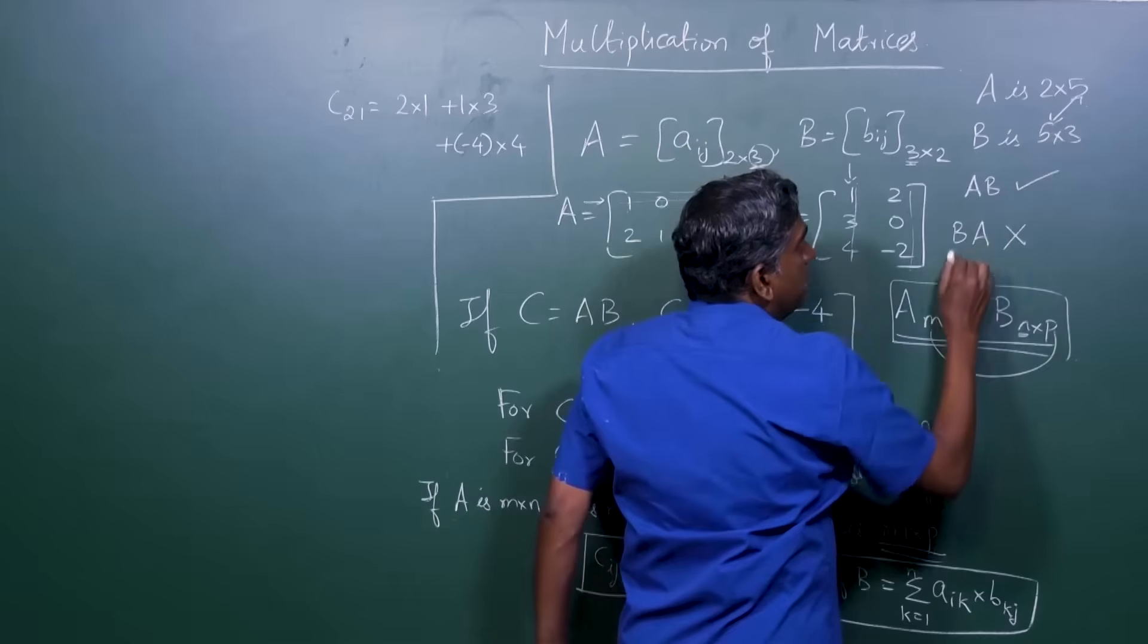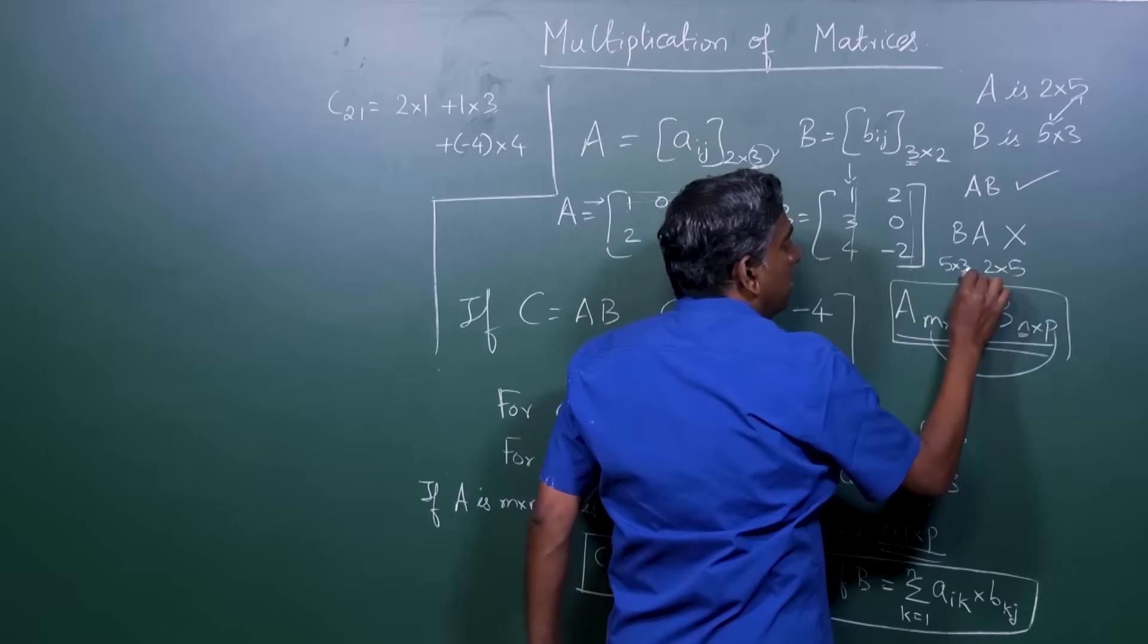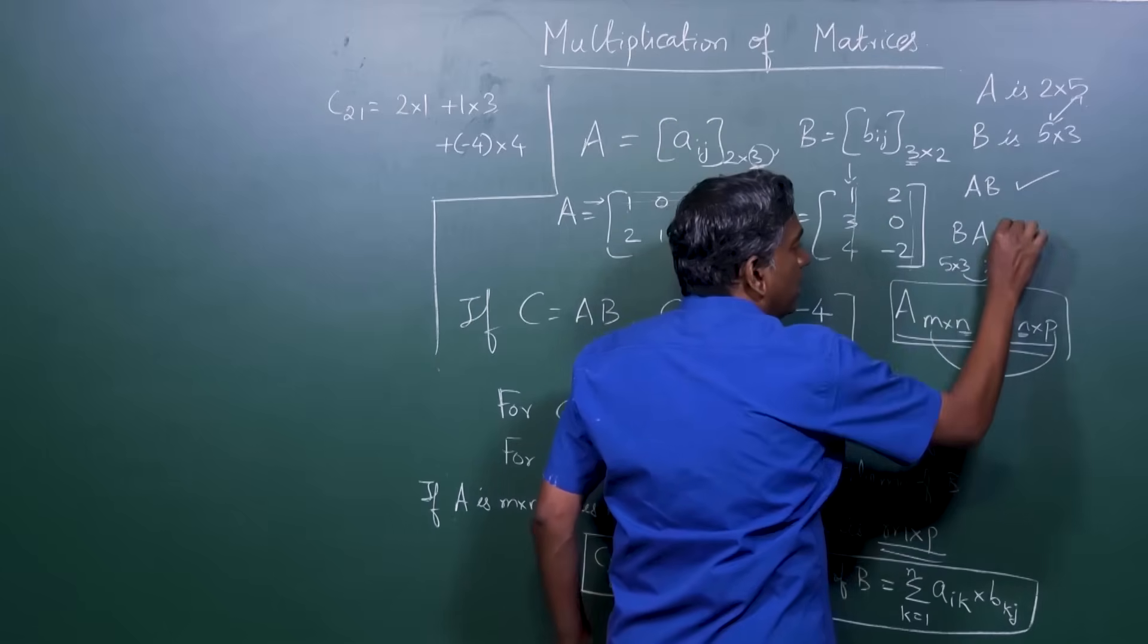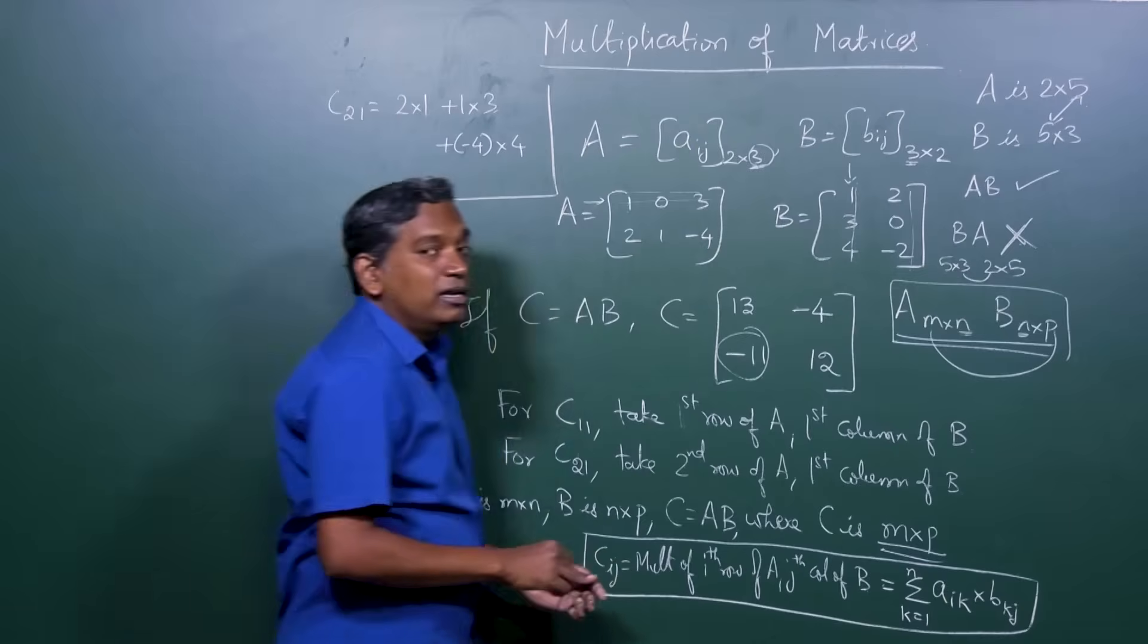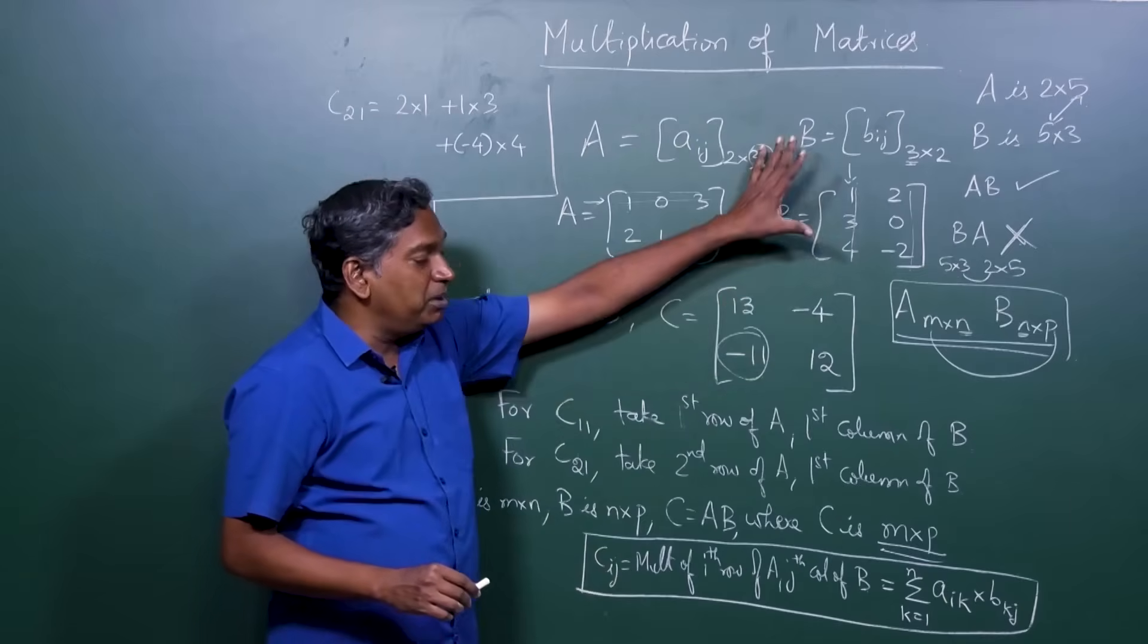but BA is not allowed. Why? Because B is 5 by 3 and A is 2 by 5, you can't multiply. These two are not equal, therefore you can't multiply. So there are only some situations where you can multiply matrices.